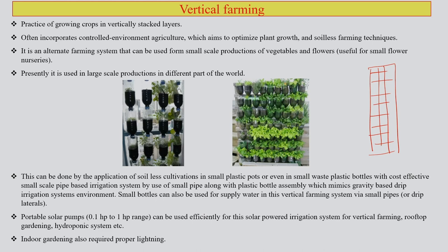Vertical farming is the practice of growing crops in vertically stacked layers. You can have vertical layers or triangular shapes going up vertically or slanted. Various kinds of design exist — if you pass through some airports you will be able to see examples of this.